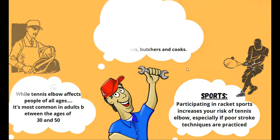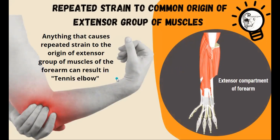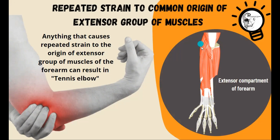In summary, the basic cause is the repeated strain to the common origin of the extensor group of muscles in the forearm. Anything that causes repeated strain to the origin of extensor group muscles of the forearm can result in tennis elbow. Here we have a representation of the extensor compartment muscles and the lower end of the humerus, showing the lateral epicondyle — the origin of all these extensor group muscles. Repeated strain here causes inflammation in this area, presenting as the symptoms we discussed.